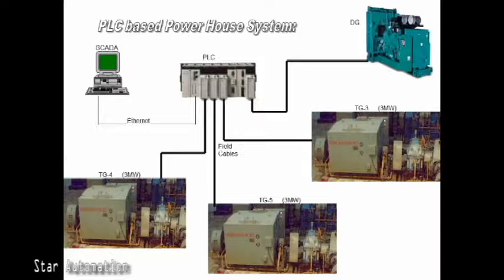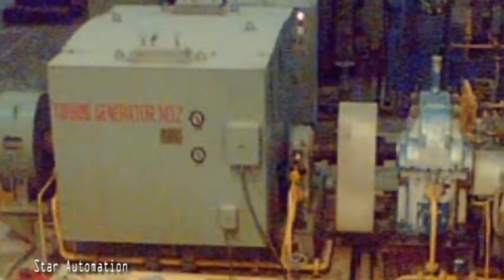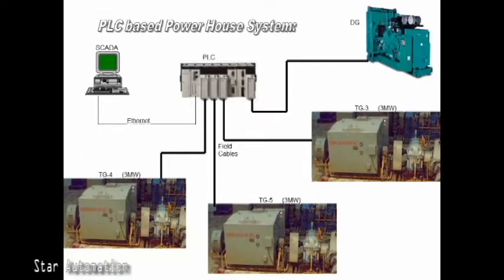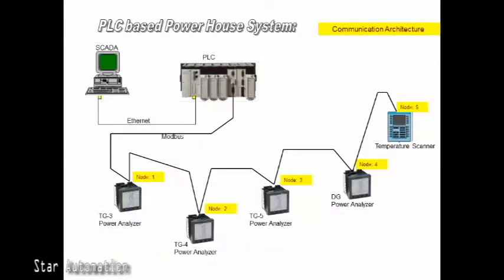In this project we have three TG sets of 3 MW each and one 1000 kVA TG set. A Programmable Logic Controller (PLC) was used to get various inputs and outputs from these power sources and associated circuit breakers and bus couplers. The PLC was used for auto synchronization of TG sets and auto load management. SCADA software communicates with the PLC over Ethernet to display real-time parameters and allow the operator to control the powerhouse from one place.